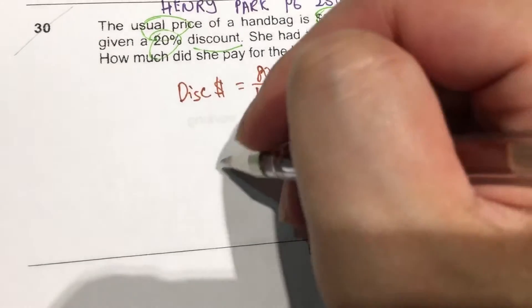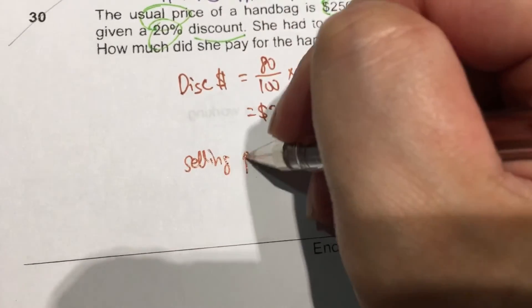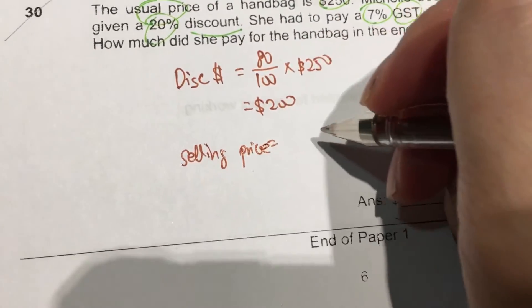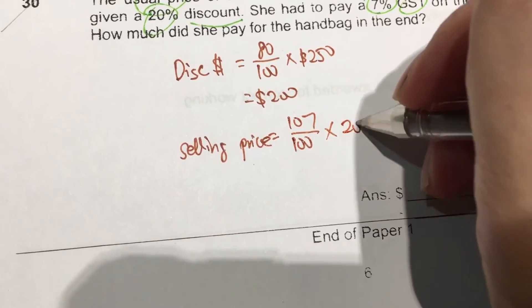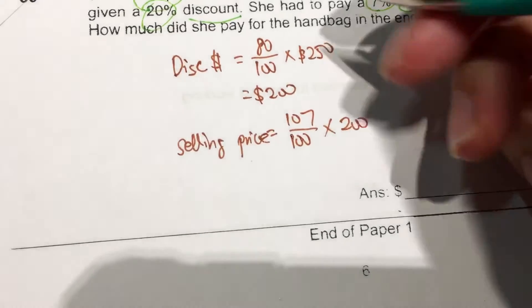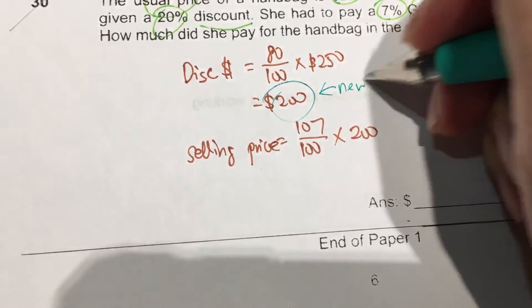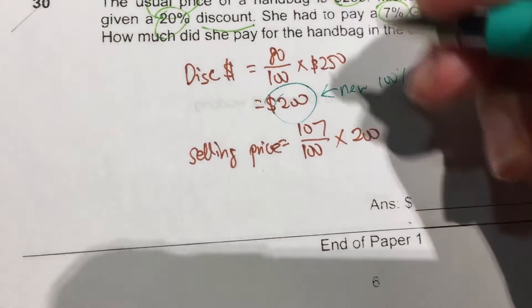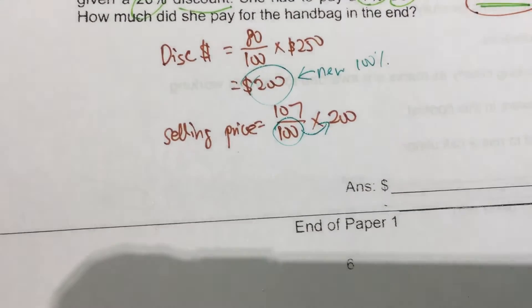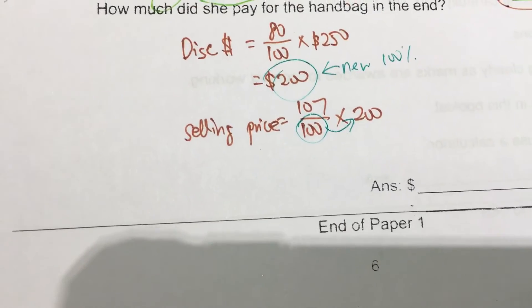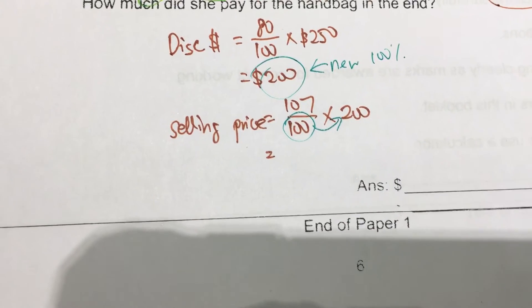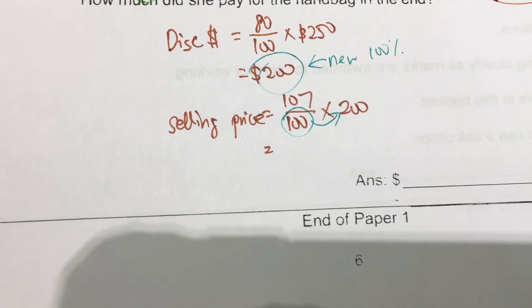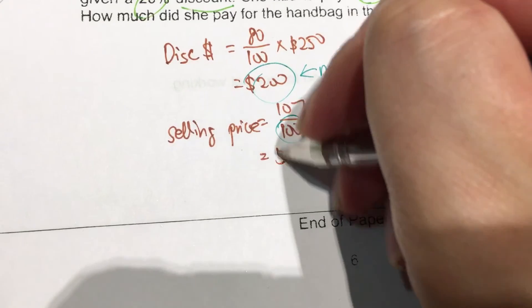The selling price is 107 over 100 times 200. Before I move on, I need to explain that this discounted price is the new 100%, and that's why we can do this. So we have 107 divided by 100 times 200, which gives us $214.